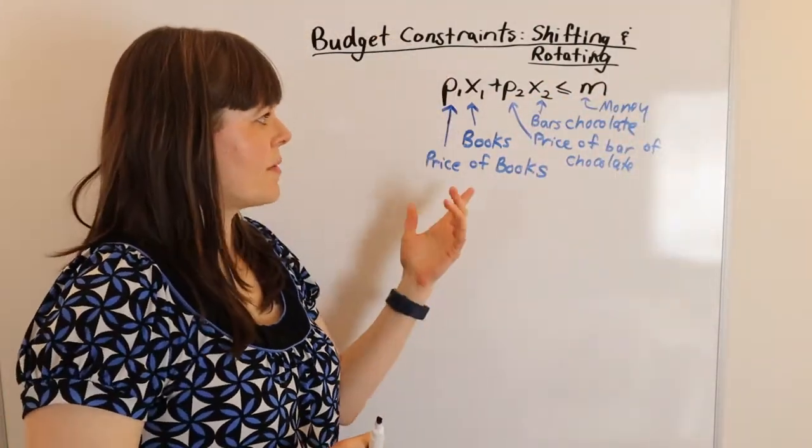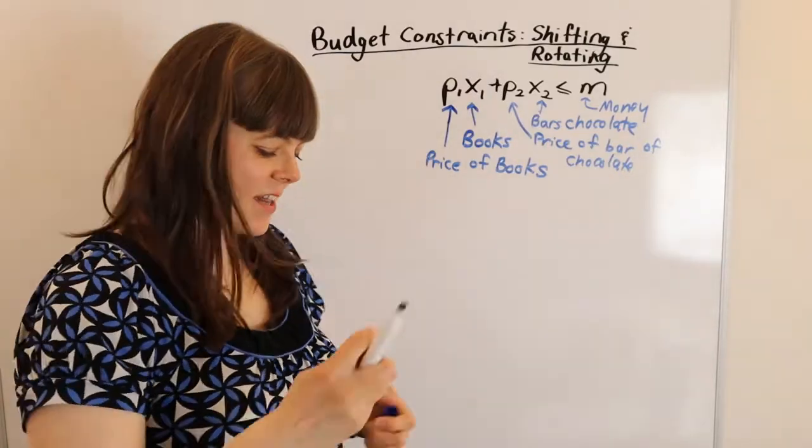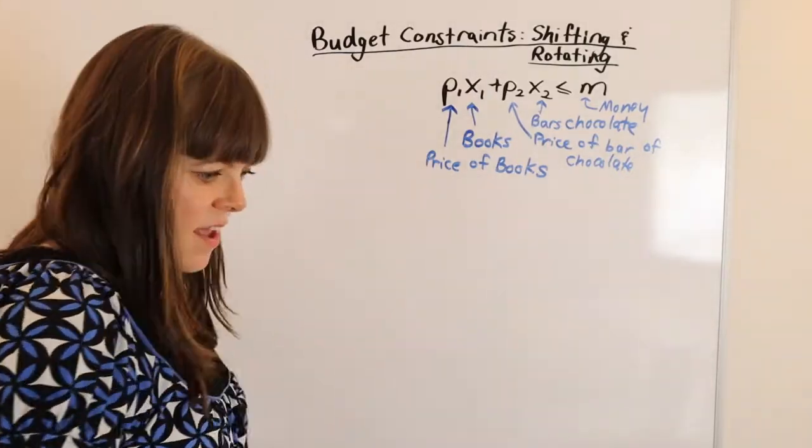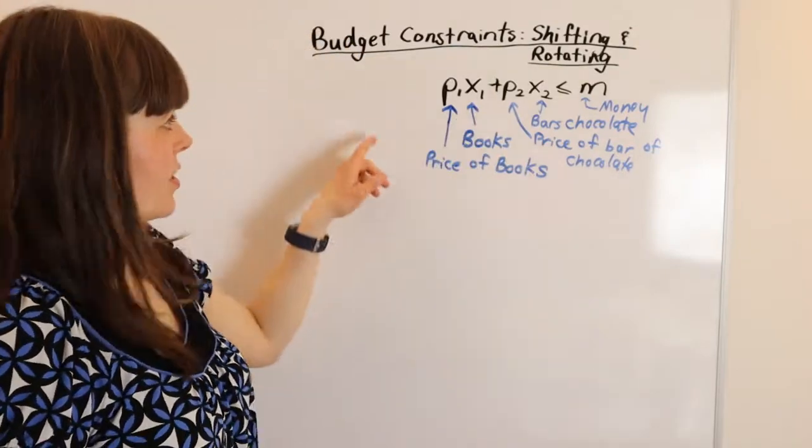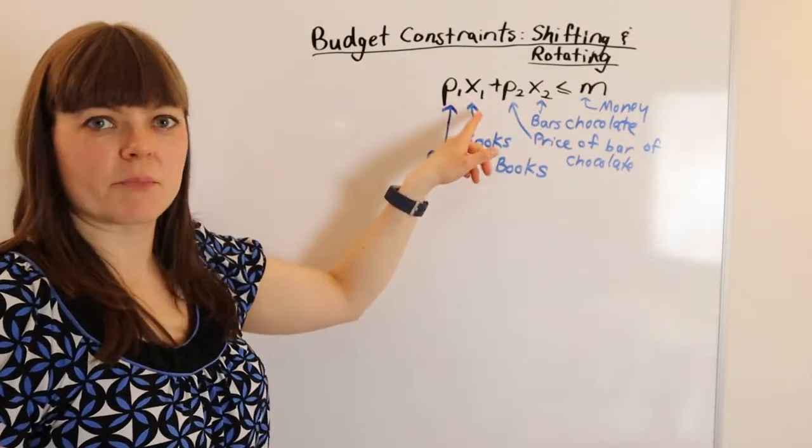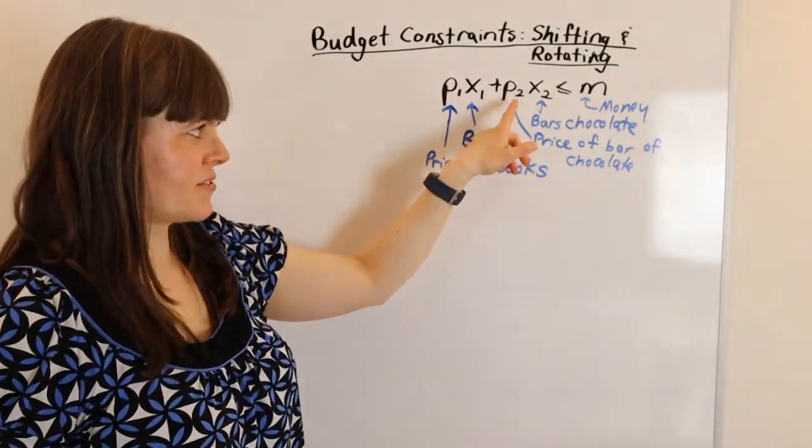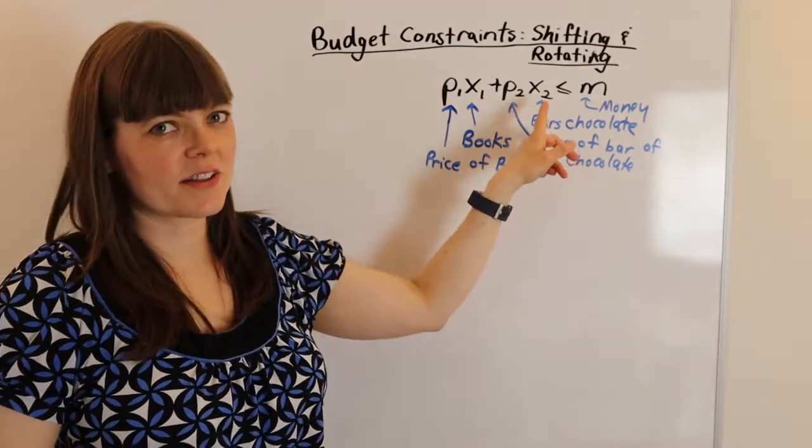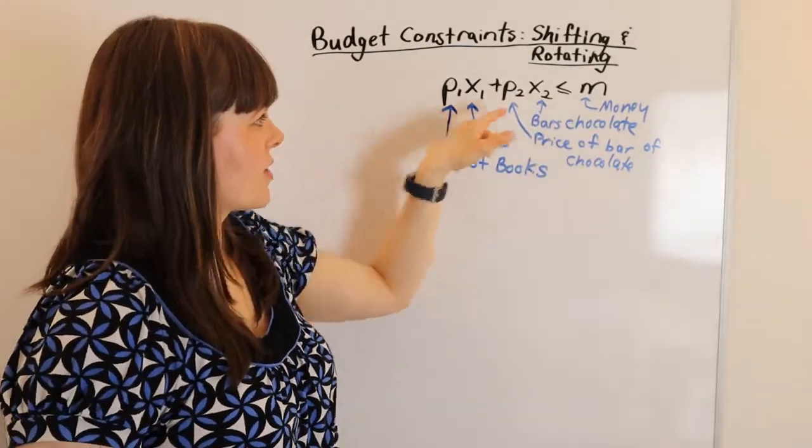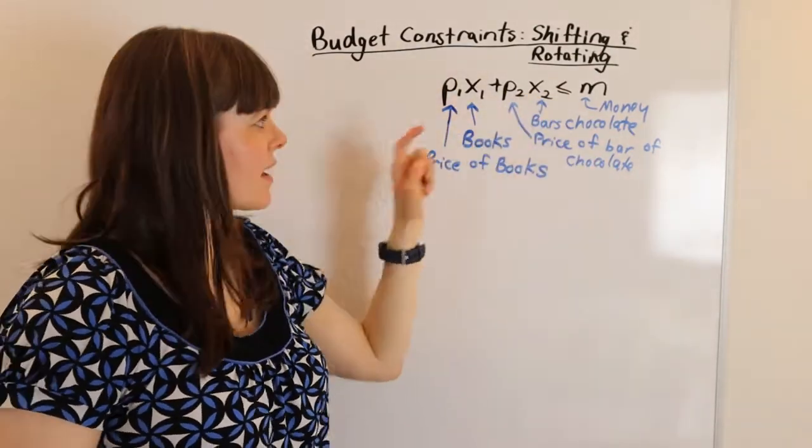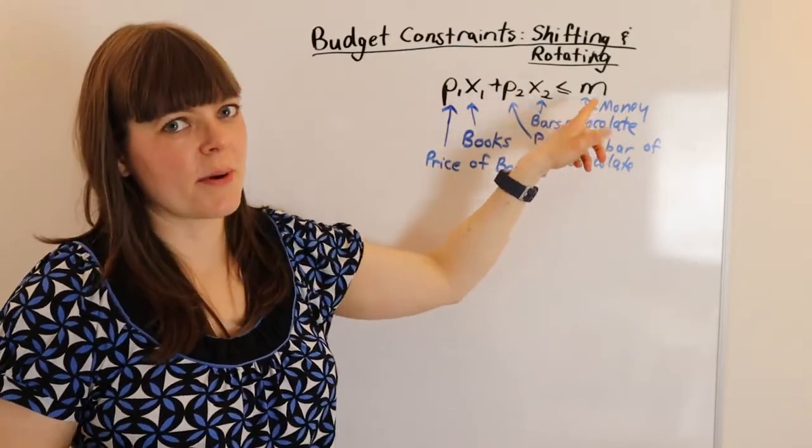All right, so I just made up two goods that I'm interested in, books and chocolate. And so our budget constraint has the price of books times the quantity of books that we buy, plus the price of chocolate times the quantity of chocolate that we buy. And this is going to give us our total spending. And that needs to be less than or equal to the amount of money we have.